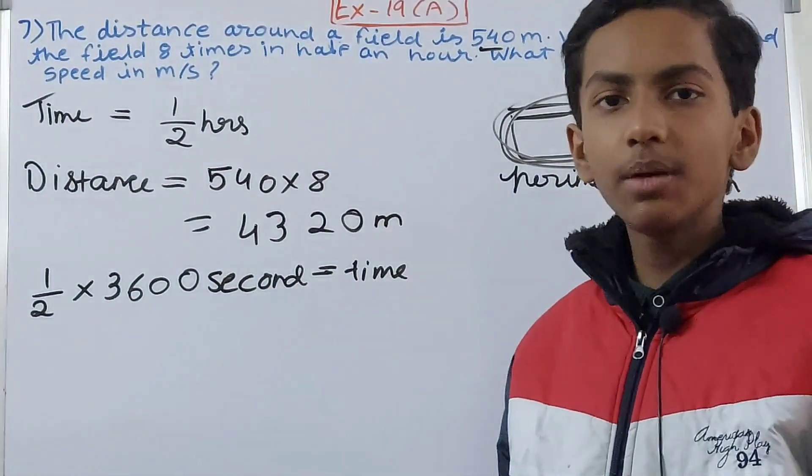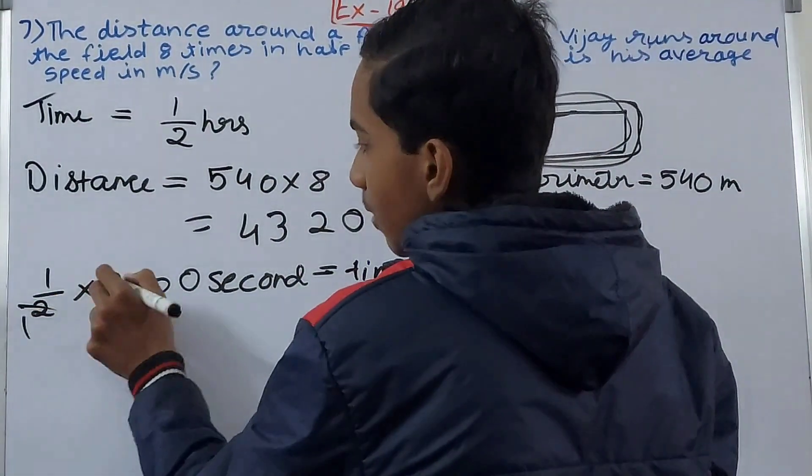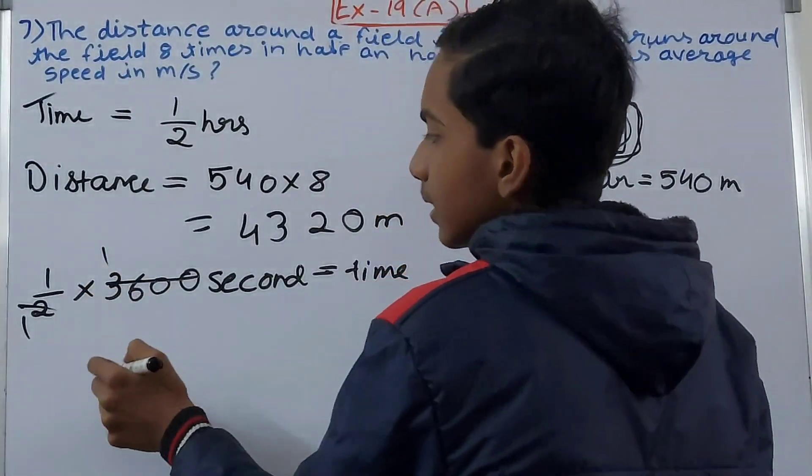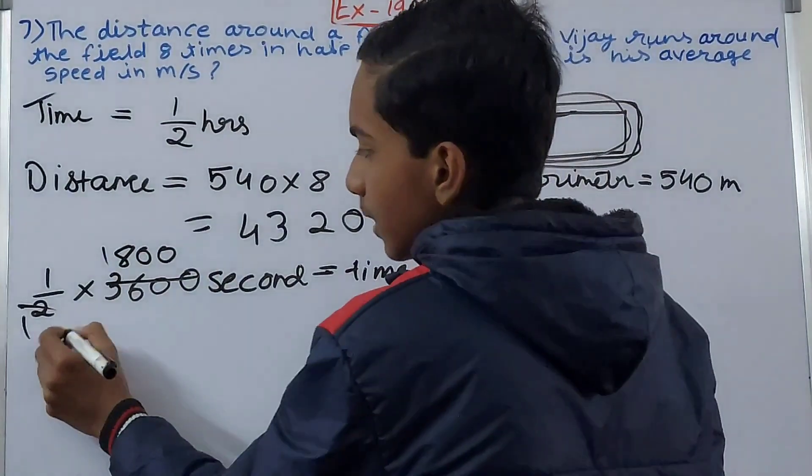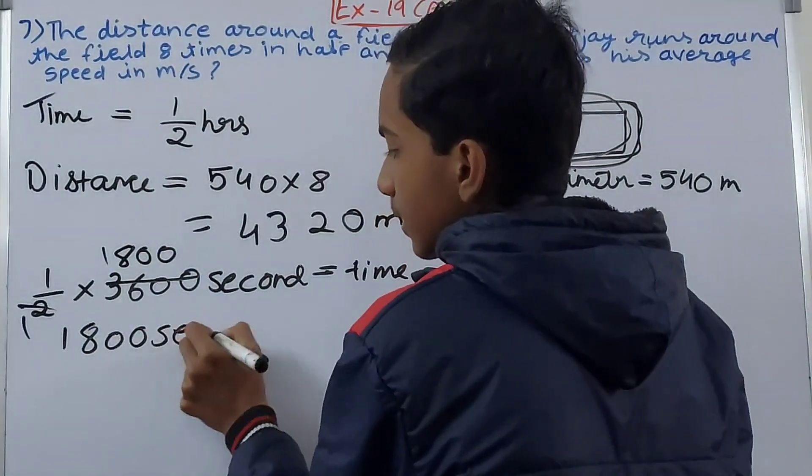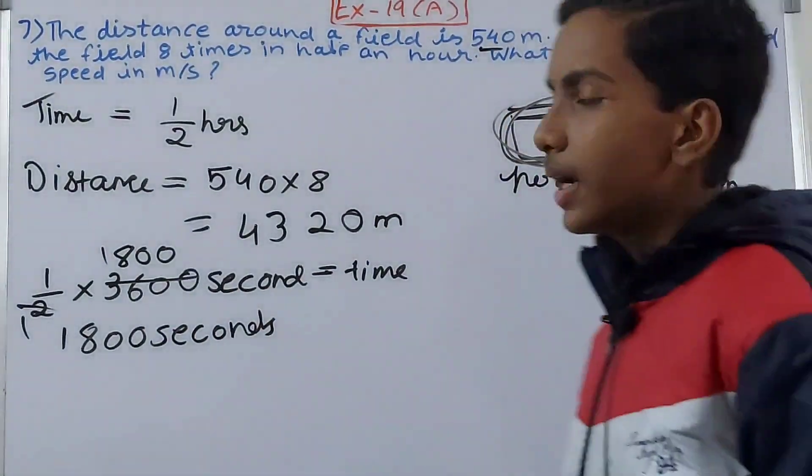Now what does this give us? One and one there, so 8. So 1800 seconds - the time becomes 1800 seconds. Now we find the speed.